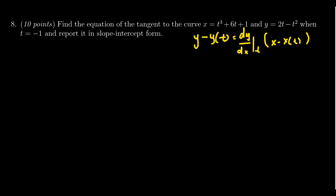So our t value here is negative 1. So we need to compute what is x at negative 1. This is going to equal negative 1 cubed plus 6 times negative 1 plus 1. Let's try to simplify that. Negative 1 cubed is negative 1. 6 times negative 1 is negative 6 plus 1. The plus 1 and minus 1 cancel out, and so we're left with x is negative 6 in this situation.